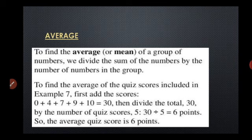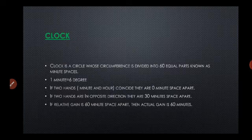Divided by 5, we are getting 30 divided by 5, that is 6 points. So the average score is 6 points. That is average.